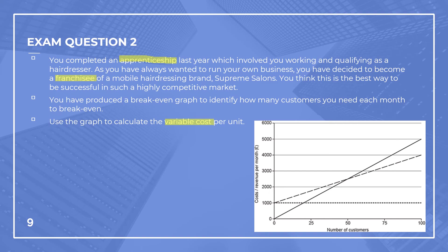It will help to label the different sections of the graph. The red line coming across horizontally, staying the same, is our fixed costs. The point where the lines meet in the middle is our break-even point, and anything above that is our profit area. The area between the fixed costs line and the total costs line represents variable costs. Looking at the graph, the break-even point appears to be at 2,500 on the costs axis, and our fixed costs are 1,000.